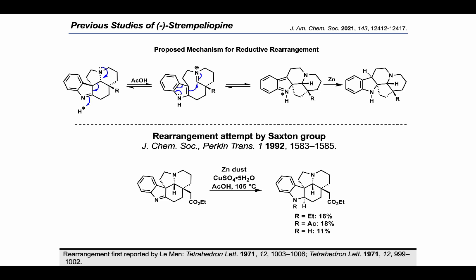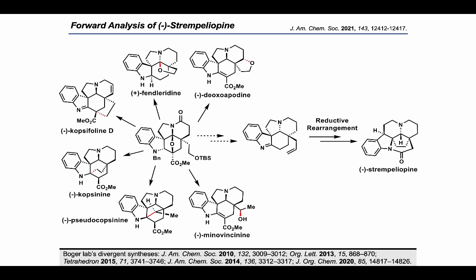Our initial goal for this project was to solve the mystery behind the capricious reactivity of zinc for the skeletal rearrangement of a spermostrychnos skeleton to a schizozygene skeleton. Towards this goal, we set out to synthesize the rearrangement precursor via our own intermediate — a densely functionalized pentacycle serving as the common intermediate for the divergent synthesis of six different classes of indole alkaloids from the Boger lab. The successful synthesis of strempeliapine would complement these previous syntheses to culminate in a divergent synthesis of seven different classes of indole alkaloids from a common intermediate.